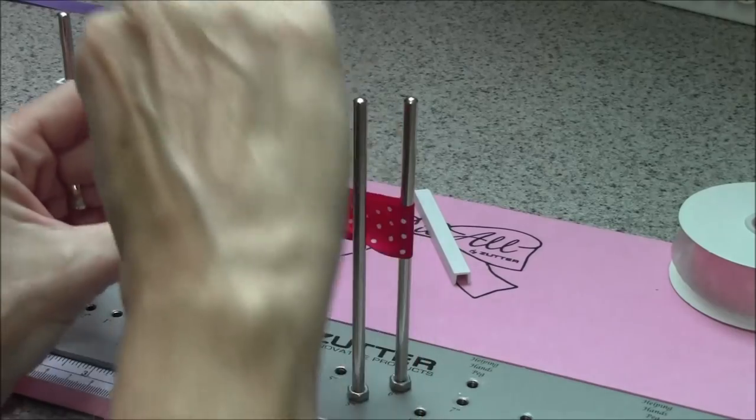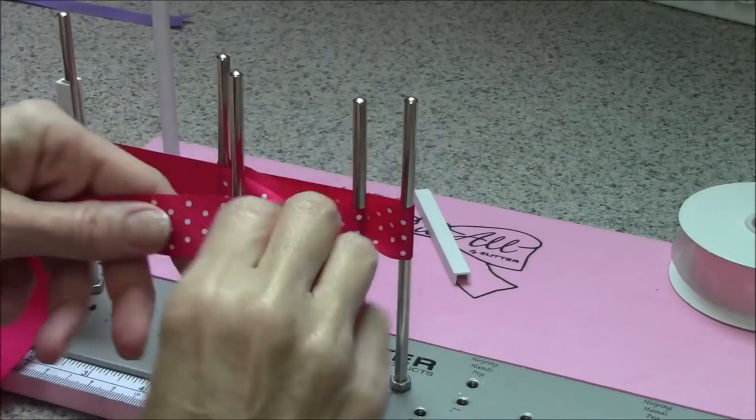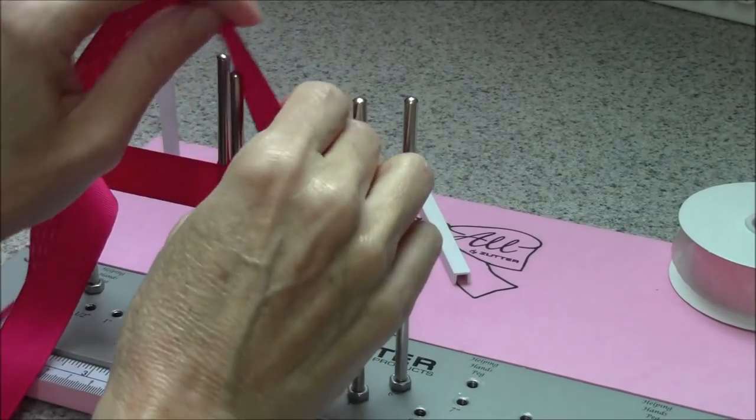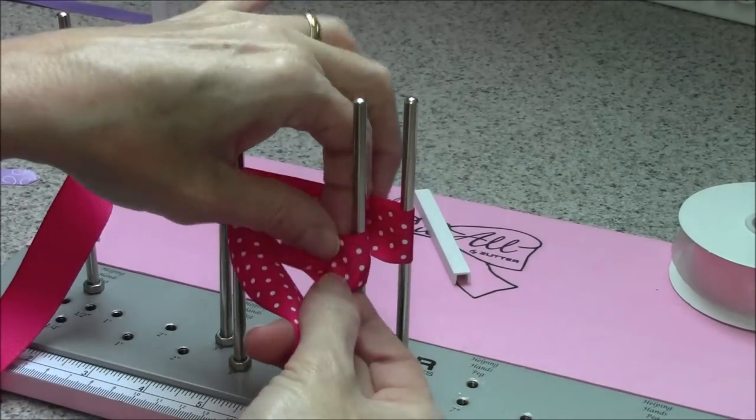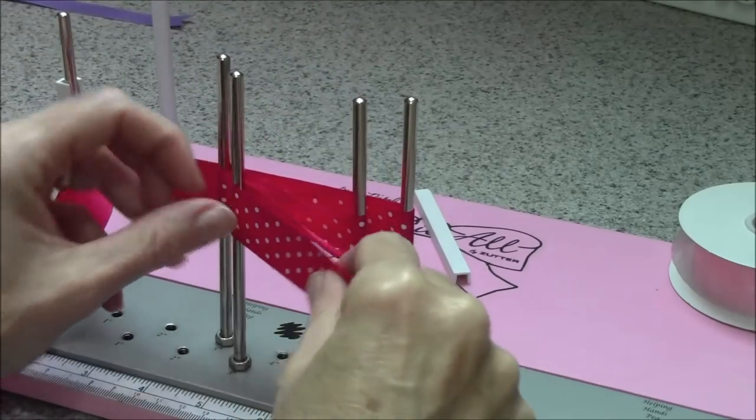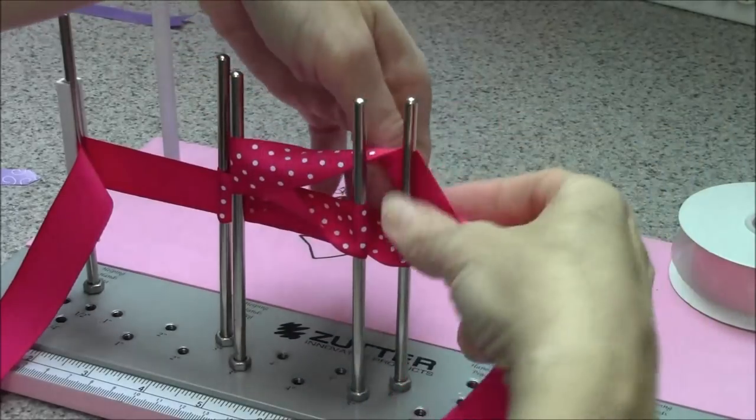Typically with a heavier ribbon, I'm going to want to make fewer loops because the heavier ribbon gets a little bulky in the center of the bow. So I wouldn't go for like three or four loops on either side for this one. We're going to do two loops in the back and one loop in the front.